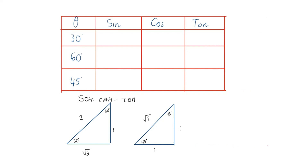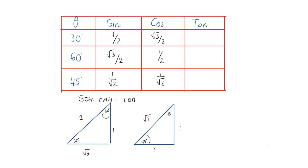We're going to define the trig ratios for 30°, 60°, and 45°. Starting with sine: sine is opposite over hypotenuse. For a 30° angle, sine of 30° is 1 over 2. Sine of 60° is √3 over 2. For 45°, the opposite side is 1 and the hypotenuse is √2, so sine of 45° is 1 over √2. For cosine: cosine of 30° is adjacent over hypotenuse, which is √3 over 2. Cosine of 60° is 1 over 2. Cosine of 45° is 1 over √2.